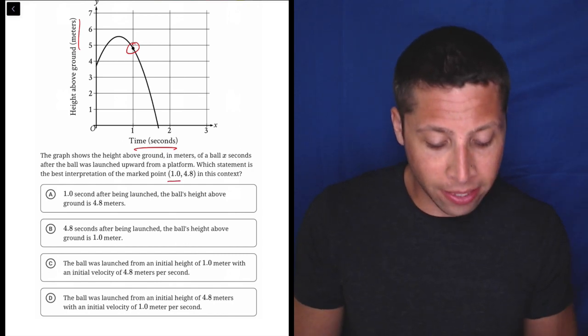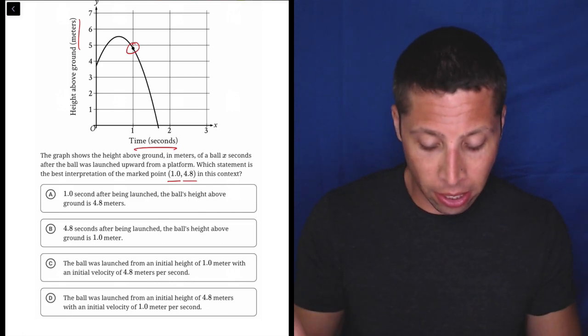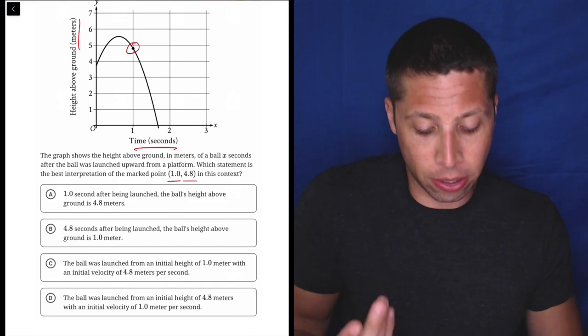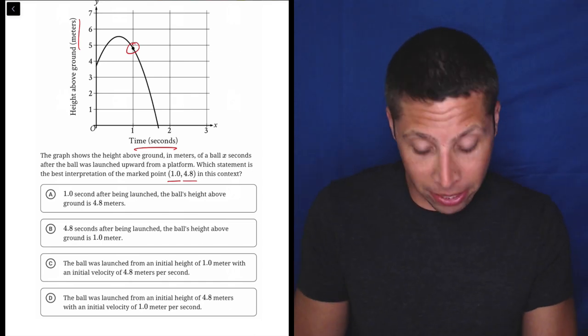So this means one second, 4.8 meters, right? Just use the units here. So look at choice A. One second after being launched, the ball's height above ground is 4.8 meters, right? It's matching the unit to the number. That's probably going to be the answer.